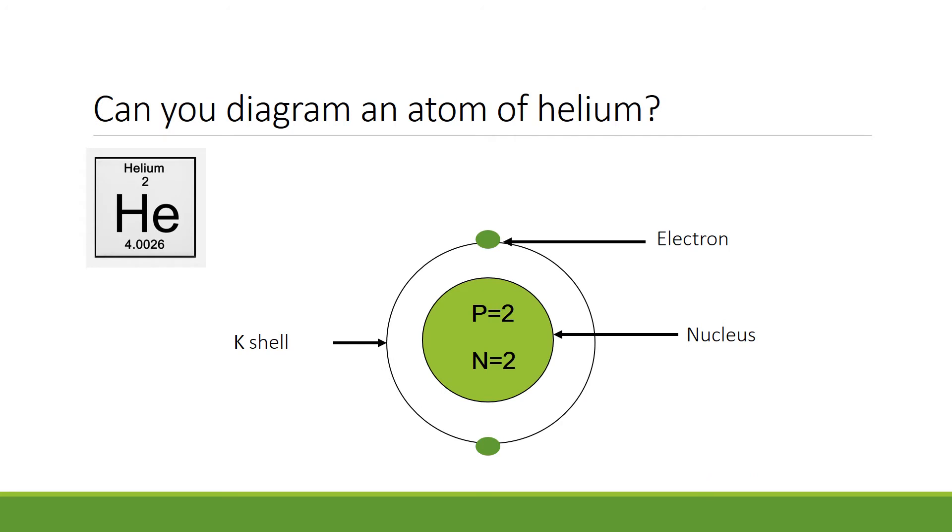On the left is an atom of helium, taken from the periodic table. Can you diagram an atom of helium? The place to start is with the nucleus. If you draw the nucleus, you need to determine how many protons there are and how many neutrons there are. The protons are indicated by the smaller number, or 2, so p equals 2 in the nucleus. The number of neutrons is determined when you subtract the smaller number, the atomic number, from the larger number, the atomic weight. So, 4 minus 2 gives you 2 neutrons in the nucleus.